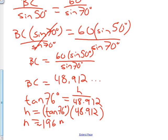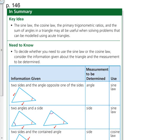So my height of the cliff is about 196 meters. That's an example problem for this section. So just remember that you're going to be using your primary ratios, the sine law, and the cosine law for these questions.